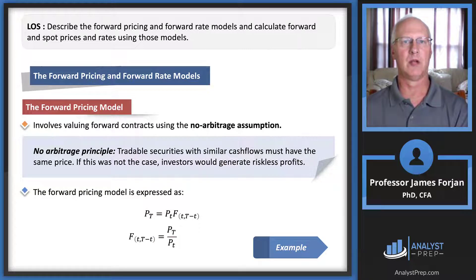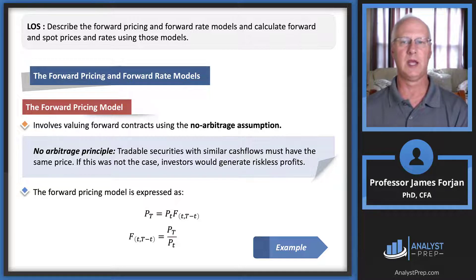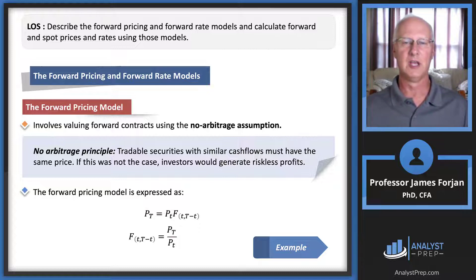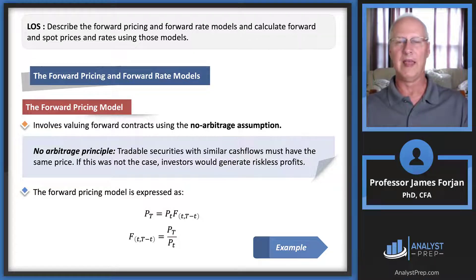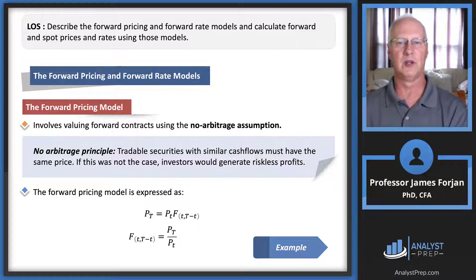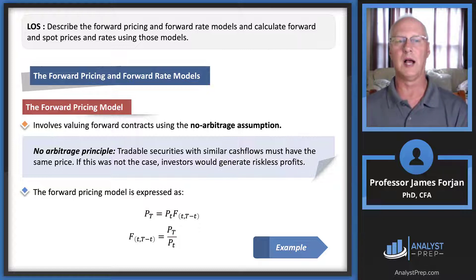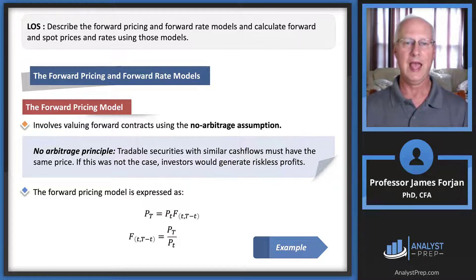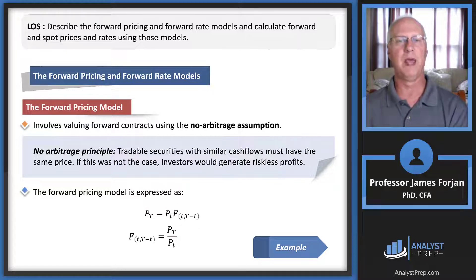The next LOS covers forward pricing and forward rate models. The forward pricing model uses a no-arbitrage assumption: two assets with the same cash flows and risk ought to sell for the same price. Tradable securities with similar cash flows must have the same price; otherwise investors would generate riskless profits. The conditions for arbitrage are no investment required, no risk, and a positive payoff at maturity.